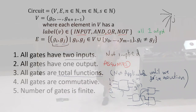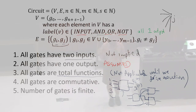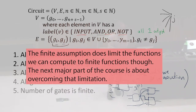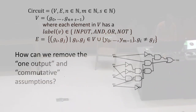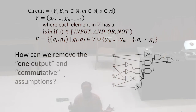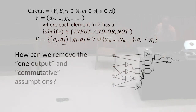We have those two assumptions — one output and commutativity — that are undesirable. Do we like the finite assumption? If we're thinking of things that can be implemented in physical hardware, we really like the finite assumption — it means if we have enough resources, we can definitely implement it. So how do we remove the one output assumption? If we have multiple outputs from a gate, we have to have some way to label them. Instead of edges being pairs of gates, they're going to be pairs of outputs and inputs — we're going to label our outputs and inputs.